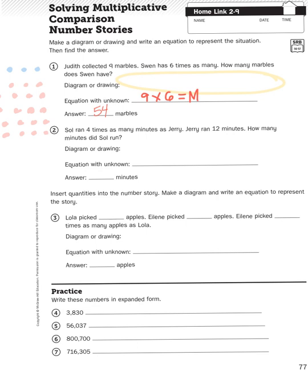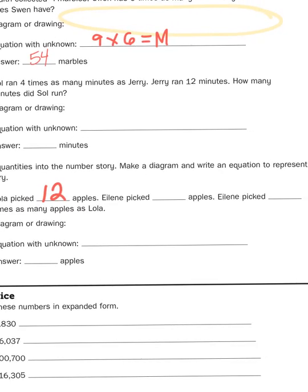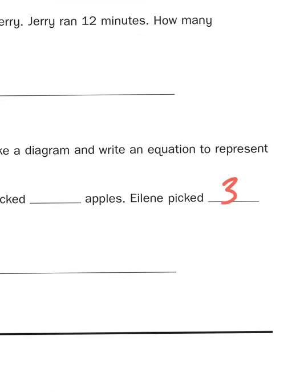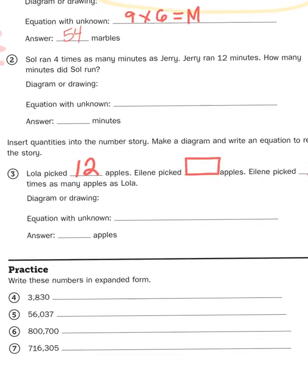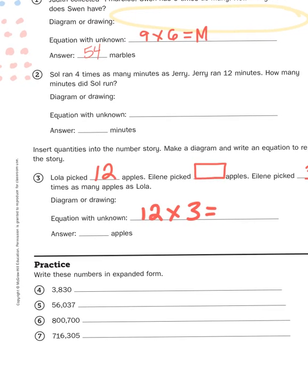They're basically saying fill in the blank, give it some numbers, and then try out the problem that you just created. Lola picked blank apples. Eileen picked blank apples. Eileen picked blank times as many apples as Lola. So an example would be: let's say Lola picked 12. Eileen picked blank apples. Let's say she picked three times as many. So now our missing number is the amount of apples Eileen picked. Eileen picked three times as many as Lola, so 12 times 3 equals A for apples.